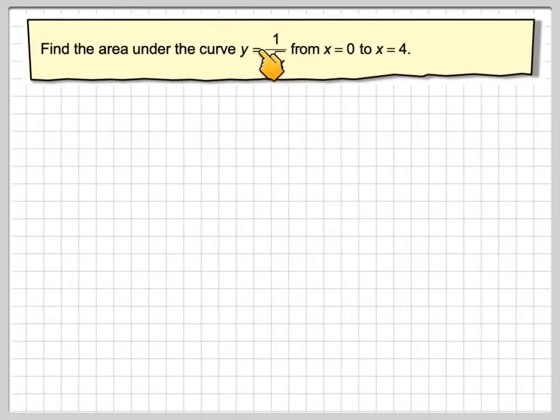Find the area under the curve y equals 1 over the square root of x from x equals 0 to x equals 4.